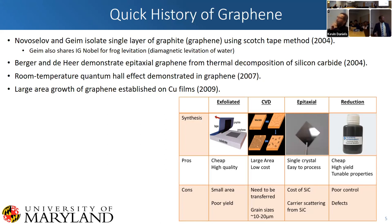The room temperature quantum Hall effect was demonstrated in 2007, and then large area growth of graphene was established on copper foils or films in 2009. Really this is a tight timeline of a lot of different ways of graphene growth. Another method I didn't mention is the reduction of graphene oxide, and so you have all of these methods of growth, each with different pros and cons.